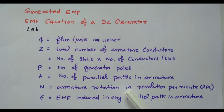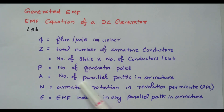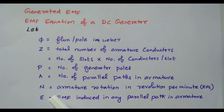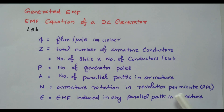The parallel path depends upon the winding — either wave winding or lap winding. Based on that, we can decide the number of parallel paths. N is the armature rotation in revolutions per minute; the speed of the DC generator is given by N. E is the EMF induced in any parallel path in the armature. So these are all the various notations available.